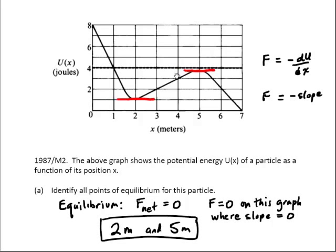Part A, we want to identify all points of equilibrium for the particle. Very simply, this is wherever the slope is zero. There's two places where the slope is zero: x equals 2 meters and x equals 5 meters.